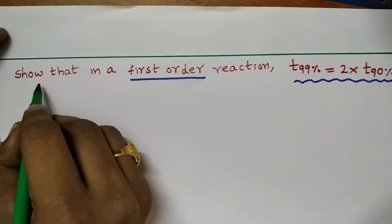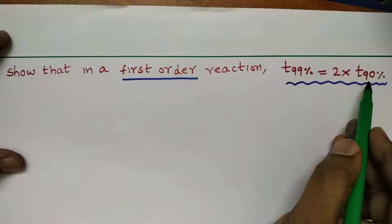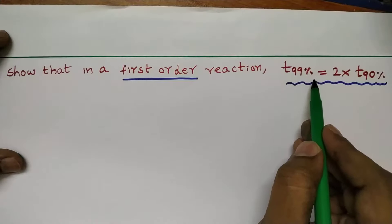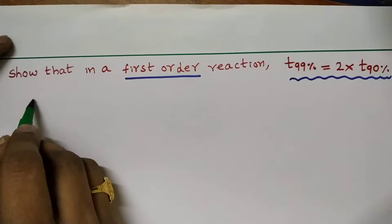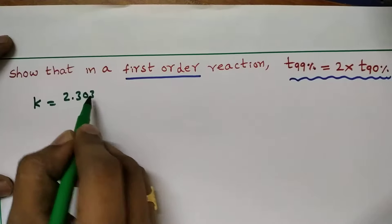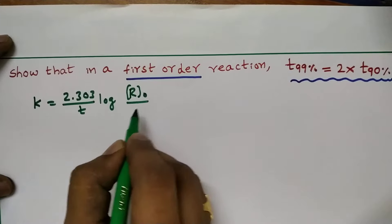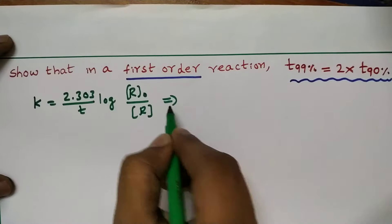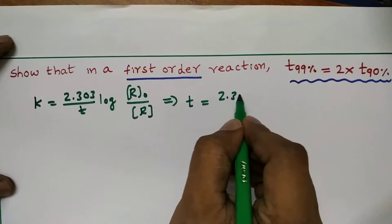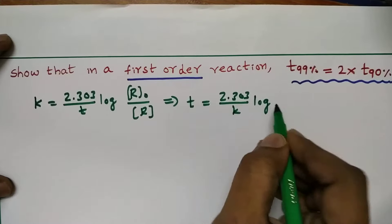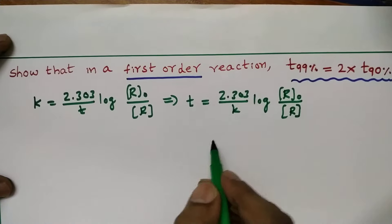Let us discuss: in a first order reaction, t99% is equal to 2 into t90%. The formula is k = 2.303/t × log(initial concentration / concentration after some time). Rearranging, t = 2.303/k × log(R₀/R), where R₀ is the initial concentration and R is the concentration after some time.